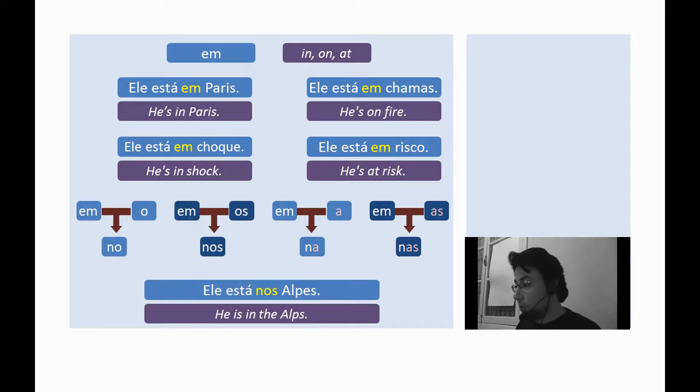The preposition em can also be contracted with the articles. And then, we have no, nos, na, nas. Example. Ele está nos Alpes. He is in the Alps.